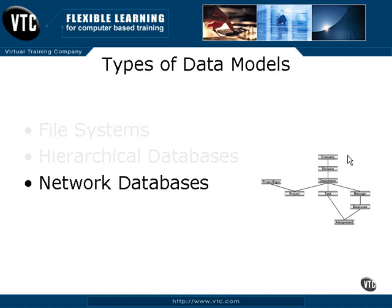The next generation up from hierarchical databases were network databases. Essentially, what a network database allowed was a child object to have multiple parents. In this case, you see you have project, which is actually a child of both a project type and a department. What actually happened was it allowed this assignment object to come into play, which is essentially a many-to-many relationship between task and employee. A task is performed by many employees, and an employee can have many tasks, therefore a many-to-many relationship.